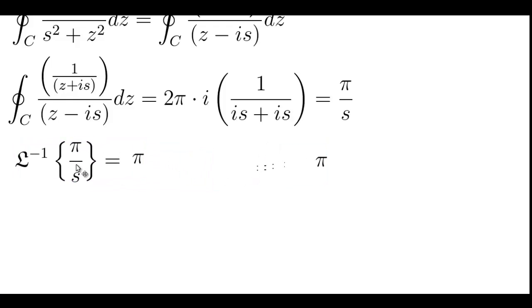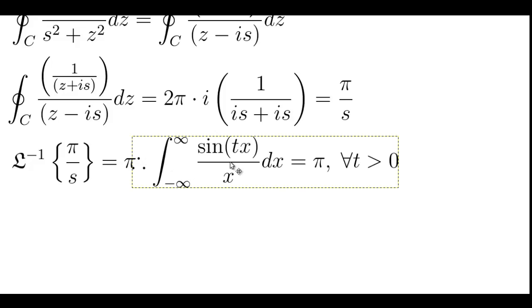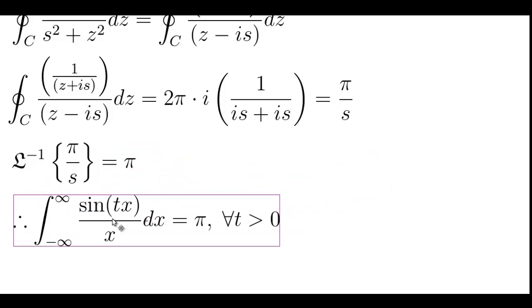We have the inverse Laplace transform of pi over s is equal to pi. And from that, we can conclude the following. That is to say, the integral from negative infinity to infinity of sine of tx over x dx is equal to pi for all t greater than 0.